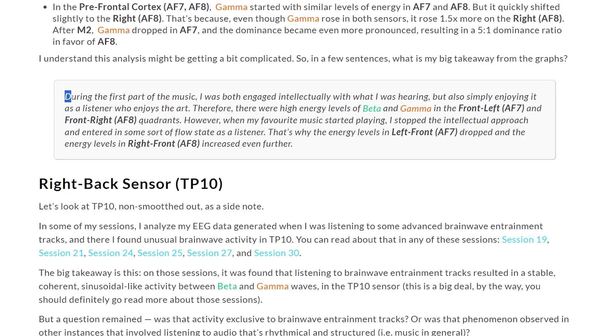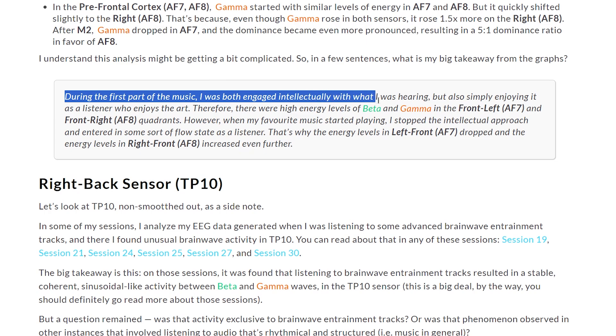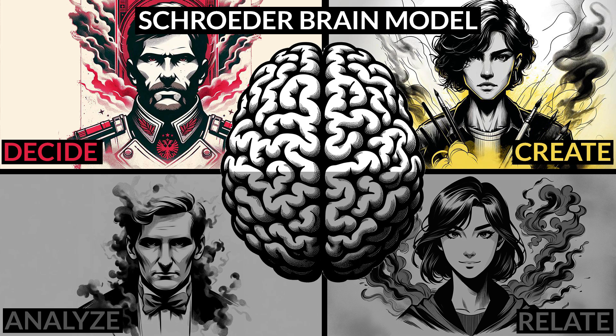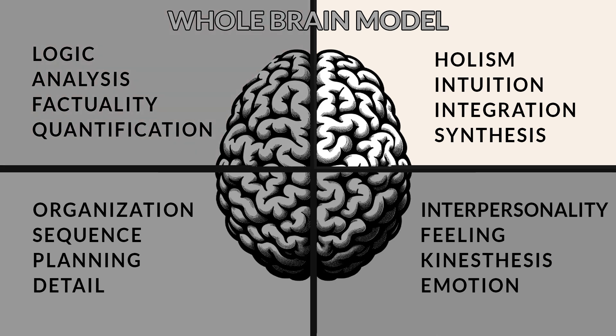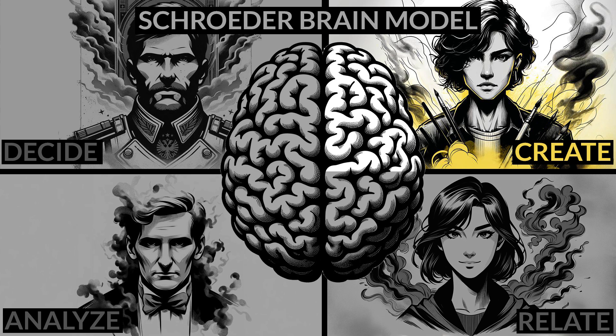According to some brain quadrant models, the front-right part of the brain is associated with creativity and artistic engagement. My interpretation is that during the first part of the music I was simultaneously engaged intellectually and analytically with the music while also enjoying it emotionally. Therefore there were high energy levels of beta and gamma in both AF7 and AF8. However, when my favorite music started playing, I stopped the analytical approach and entered a flow state as a listener — that's why energy levels in the left-front AF7 dropped while the right-front AF8 increased even further.